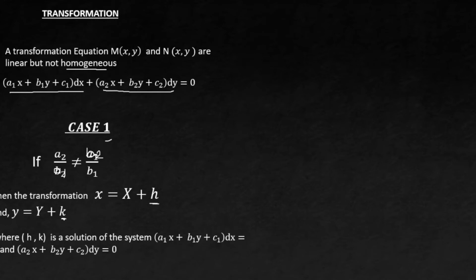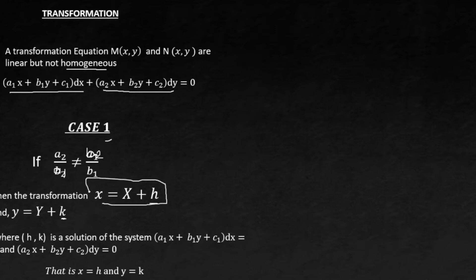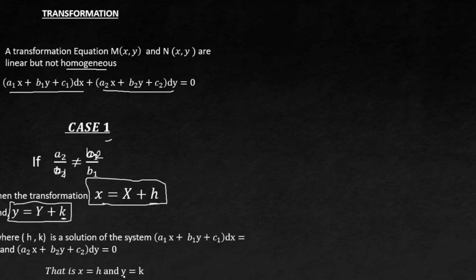After getting h and k, you insert them into the equations: small s equals big S plus h, and small y equals big Y plus k. This substitution is what reduces the equation toward the homogeneous form.